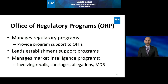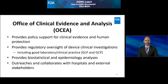The Office of Regulatory Programs, or ORP, manages OPEQ's regulatory programs. ORP provides program support to the OHTs, leads the establishment support programs such as registration and listing, and manages the center's market intelligence programs, which involves the center's programs on recalls, shortages, allegations, and MDRs. Finally, let's take a look at the Office of Clinical Evidence and Analysis, or OCEA. OCEA provides policy support for clinical evidence and human protection, and provides regulatory oversight of device investigations, including both good laboratory and clinical practice — that is, GLP and GCP, respectively. Biostatistical and epidemiology analytics are managed from this office, and OCEA leads outreach and collaboration with hospitals and external stakeholders.